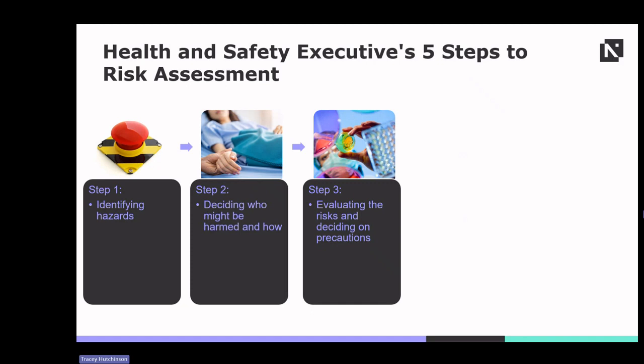Risk evaluation involves assessing the likelihood and severity of harm associated with identified hazards. This step helps prioritise risks based on their potential impact and the likelihood of occurrence. Healthcare professionals should consider existing control measures and their effectiveness in mitigating risks. Precautions may include engineering controls, administrative controls, personal protective equipment or PPE and training interventions. The goal is to implement proportionate and effective control measures to reduce risks to an acceptable level, considering the nature of the hazard and the context of its exposure.